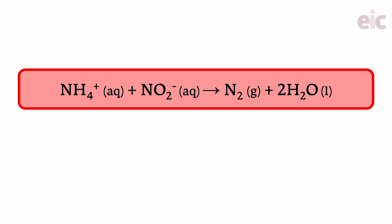The ammonium ions from the ammonium sulfate react with the nitrite ions from the sodium nitrite to make nitrogen and water.